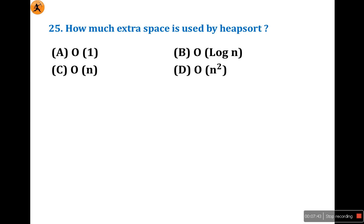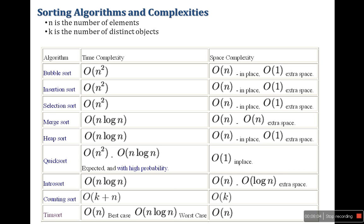How much extra space is used by Heapsort? This type of question they will ask every year - at least one or two questions based on time and space complexity. Before looking at this question, let's see a standard table. Sorting algorithms and complexities: Bubble sort time complexity is O(n²). Space complexity in-place is O(n), extra space is O(n). Almost all sorting algorithms extra space is O(n), except Merge sort and Insertion sort. In-place is O(n).